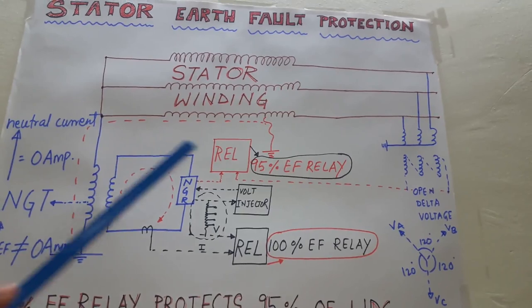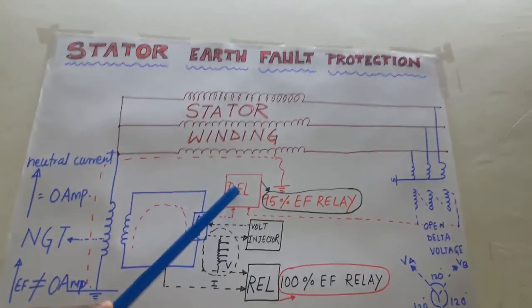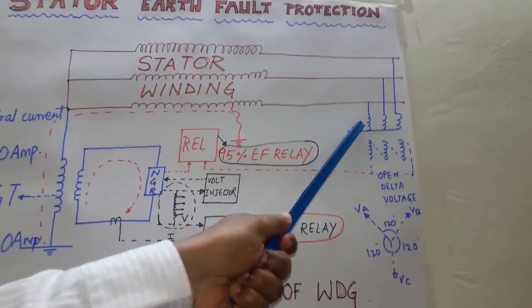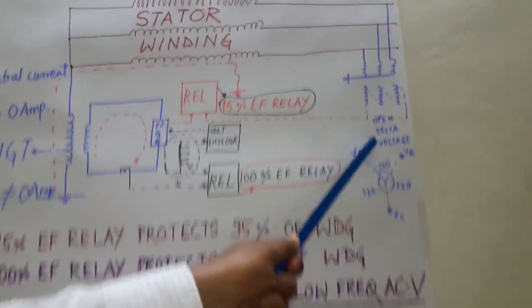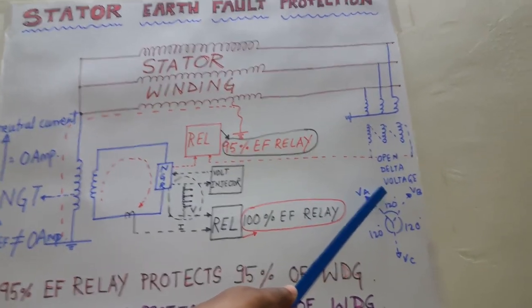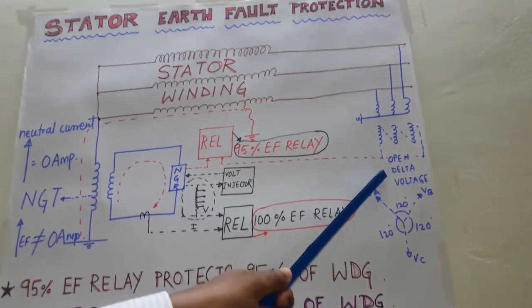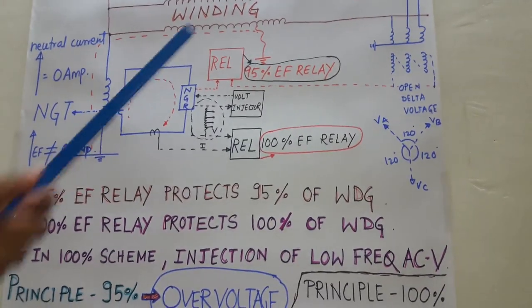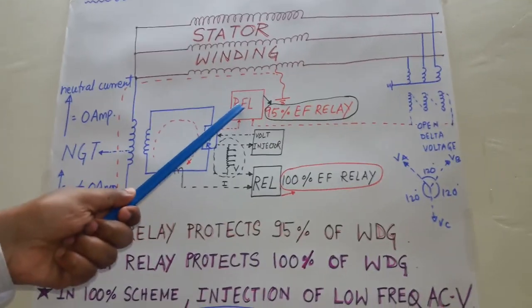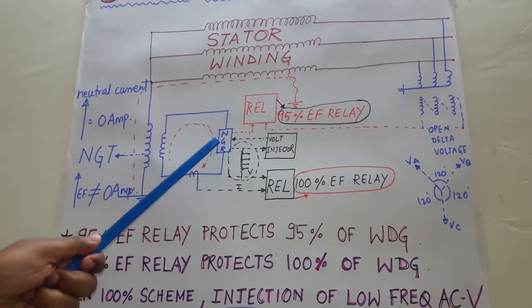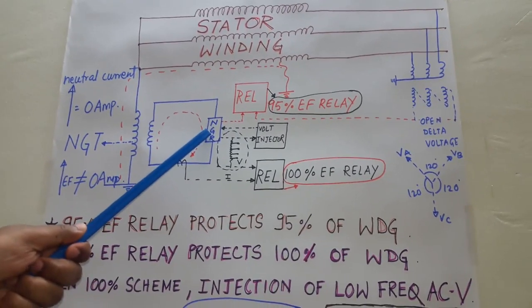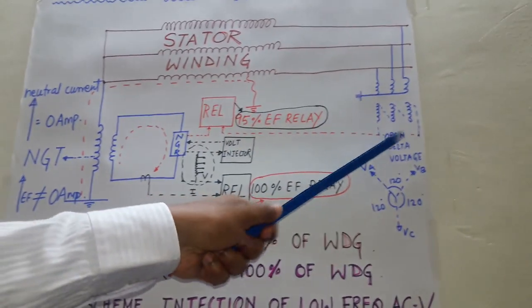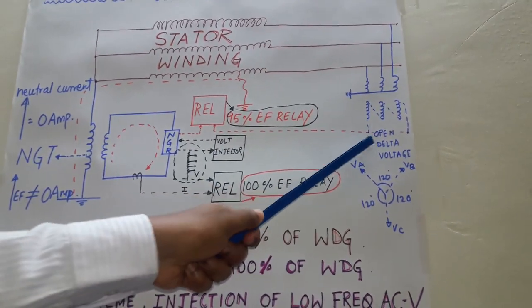The relay can also take one more input from the generator PT — the open delta voltage input. It can act as an extra condition for the relay. If you are setting the NGR level at a very low value, we can take one extra condition as the open delta voltage.